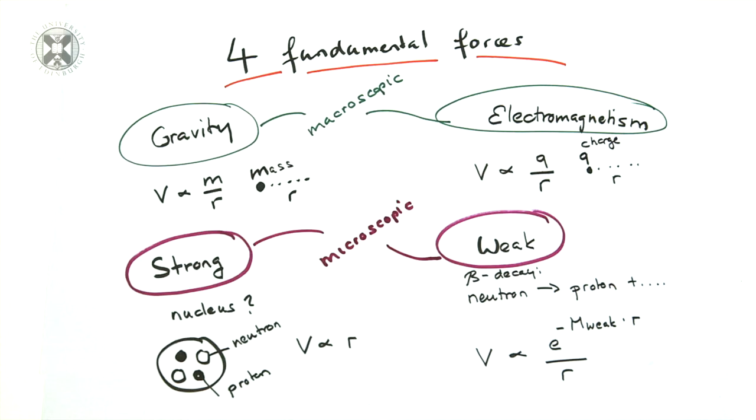We will see that the potential of the strong force is proportional to the distance and therefore radically different. The potential of the weak force is exponentially suppressed by a mass associated with the weak force carriers. The Higgs mechanism has got everything to do with this mass.